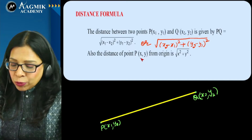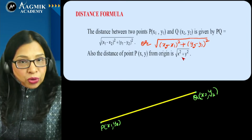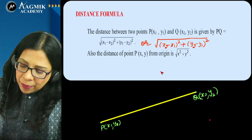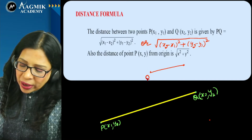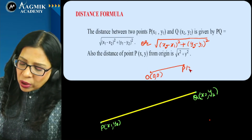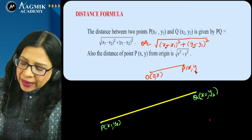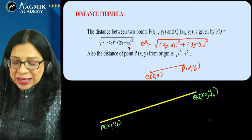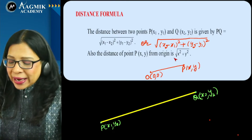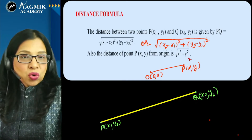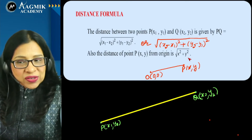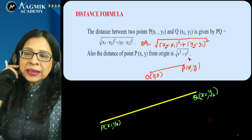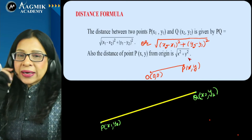If you want the distance from origin, take origin coordinates as (0, 0) and P coordinates as (x, y), then apply the same distance formula. You will get distance OP as under root of x² plus y². That was our distance formula.